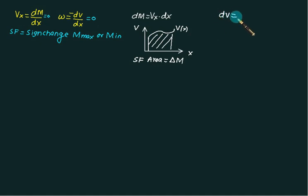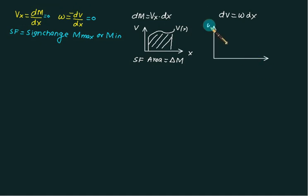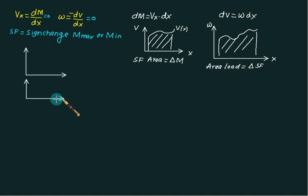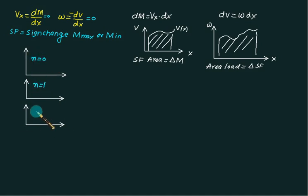Similarly, we can write dV equal to w multiplied by dx. Drawing the load diagram on the y-axis, with load w on y-axis and x on x-axis, the area under this load diagram gives the change in shear force. We draw diagrams from load to shear force to bending moment: load diagram, shear force diagram, and bending moment diagram.